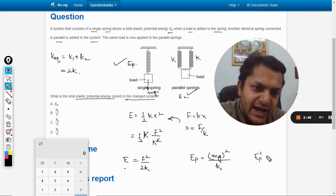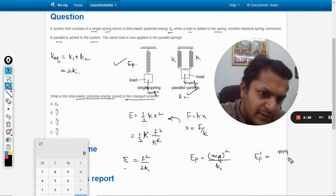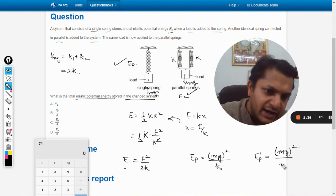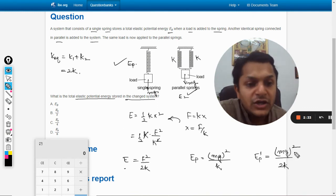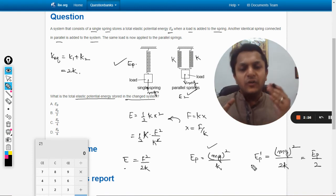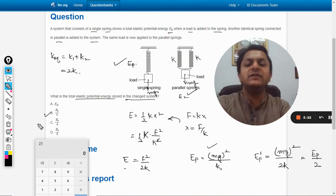So substituting the value here, now I can call it like E_p dash, that is the second case, and the load is the same, that is mg. There is no change in that. So it will be mg squared divided by 2k. So mg squared by k is equal to E_p. Hence we got the answer E_p divided by 2. If we want to find the ratio, so the answer is B, that is E_p divided by 2.